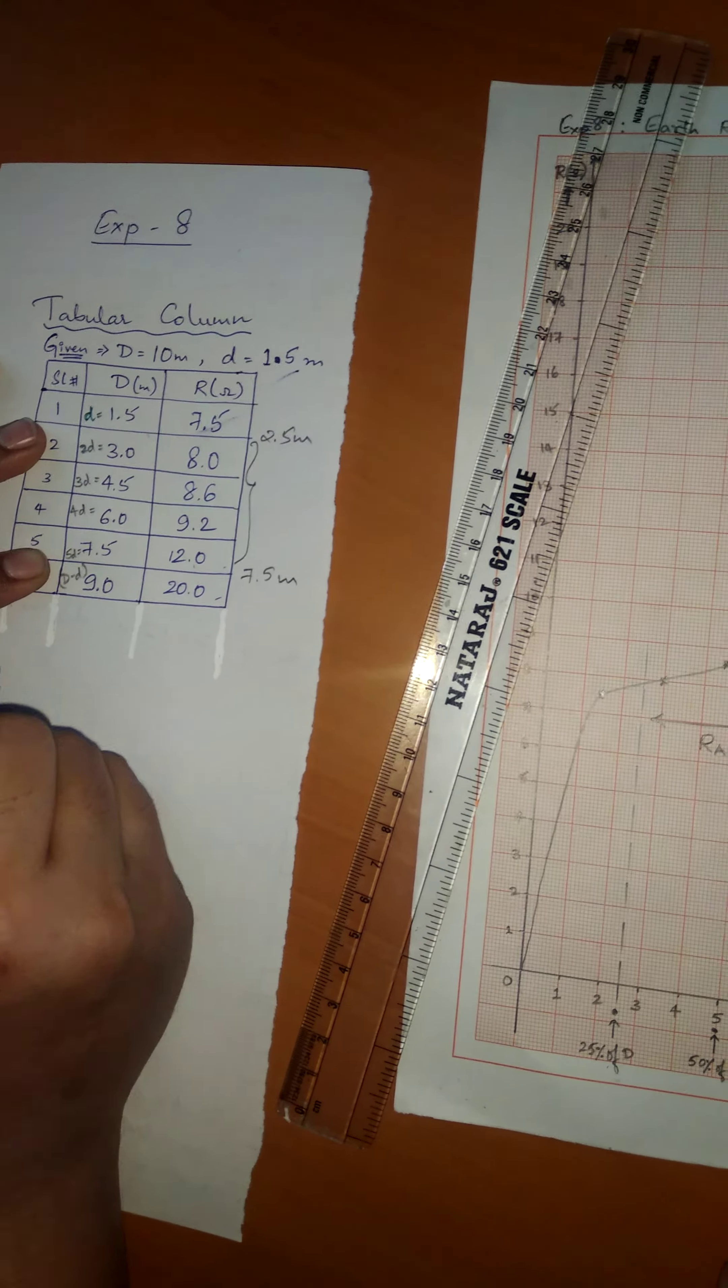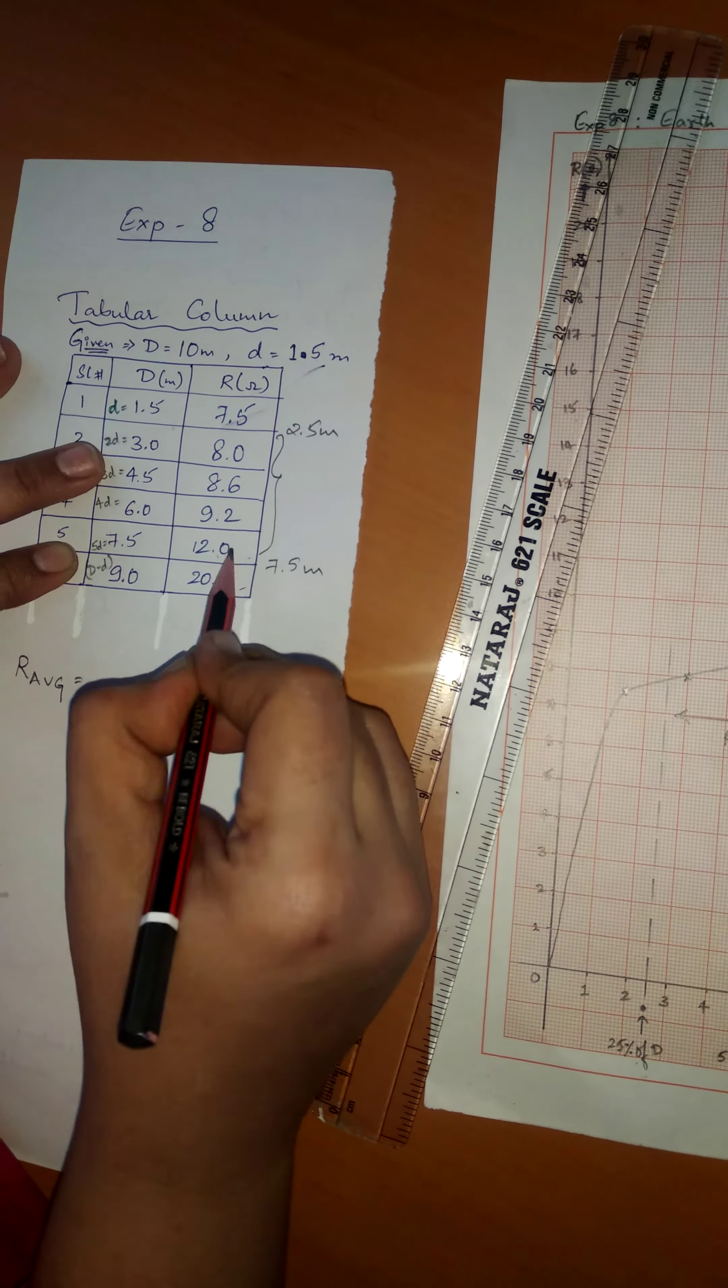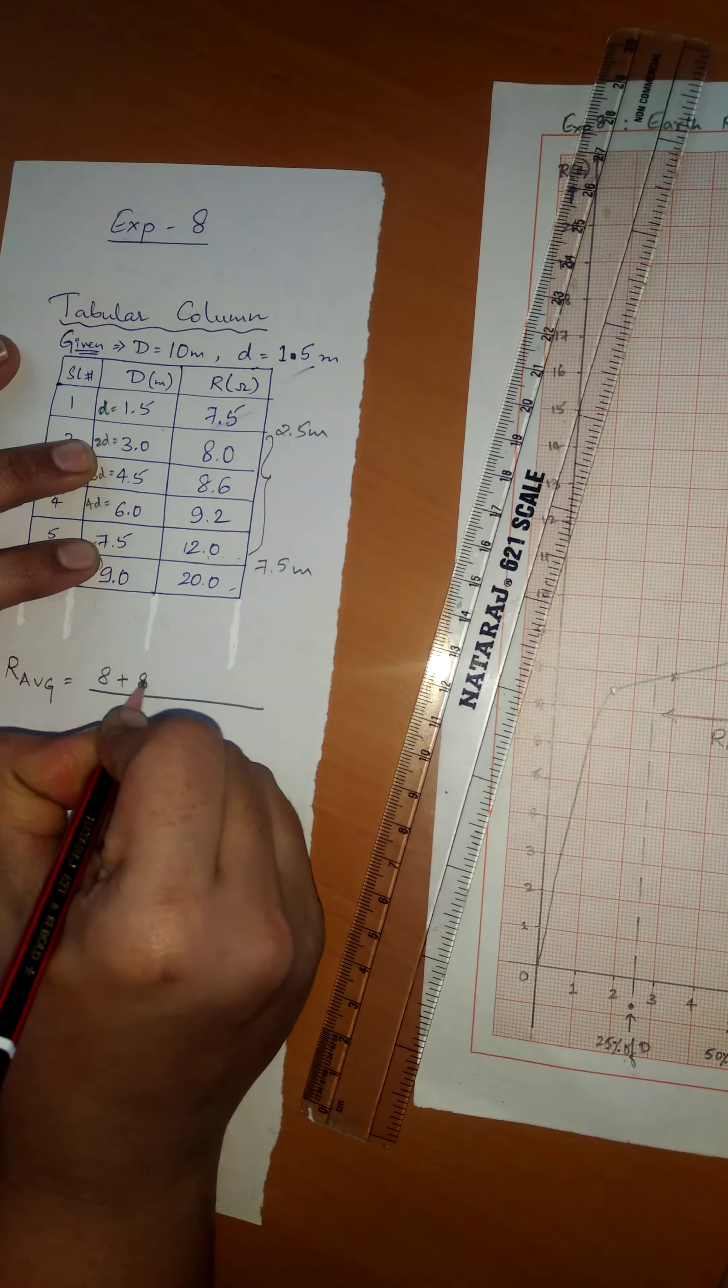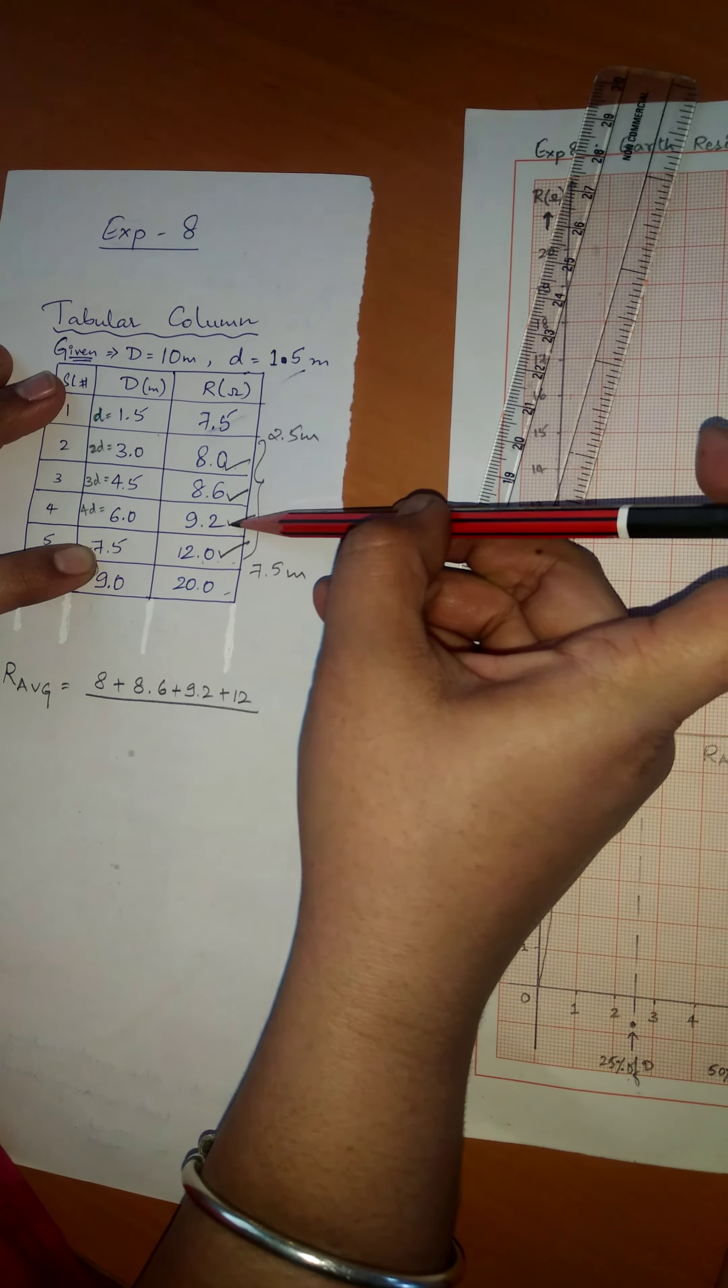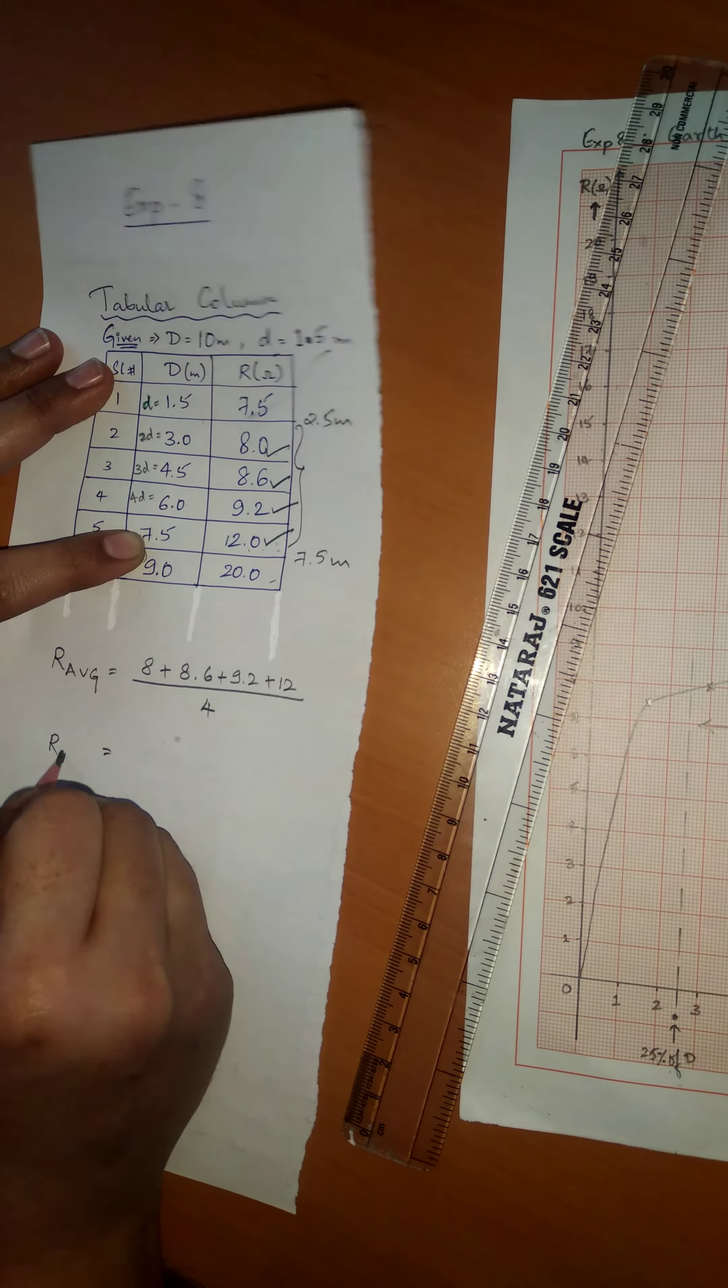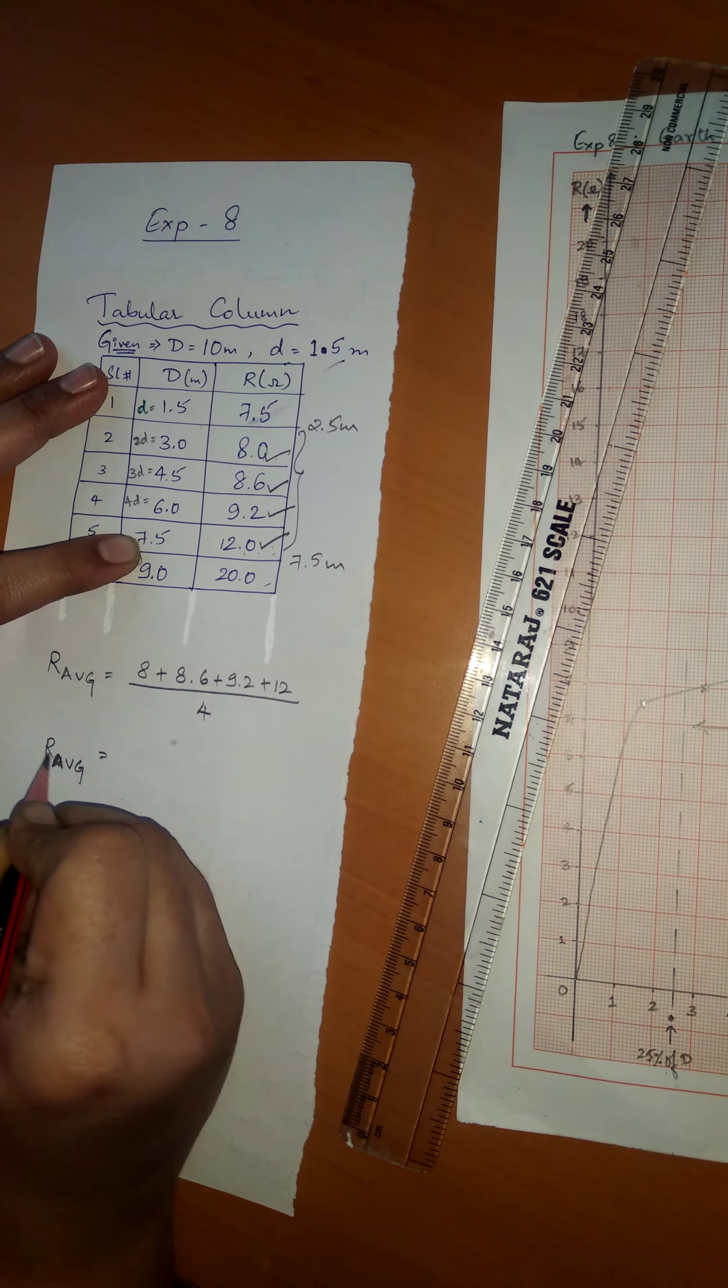Our average is given by the sum of the points that fall in between these regions, that is 8 plus 8.68, 8.6 plus 9.2 ohms plus 12 ohms, divided by the number of averages that we have taken: 1, 2, 3 and 4. When you calculate this, you get the final value of the resistance offered by the electrode point E.